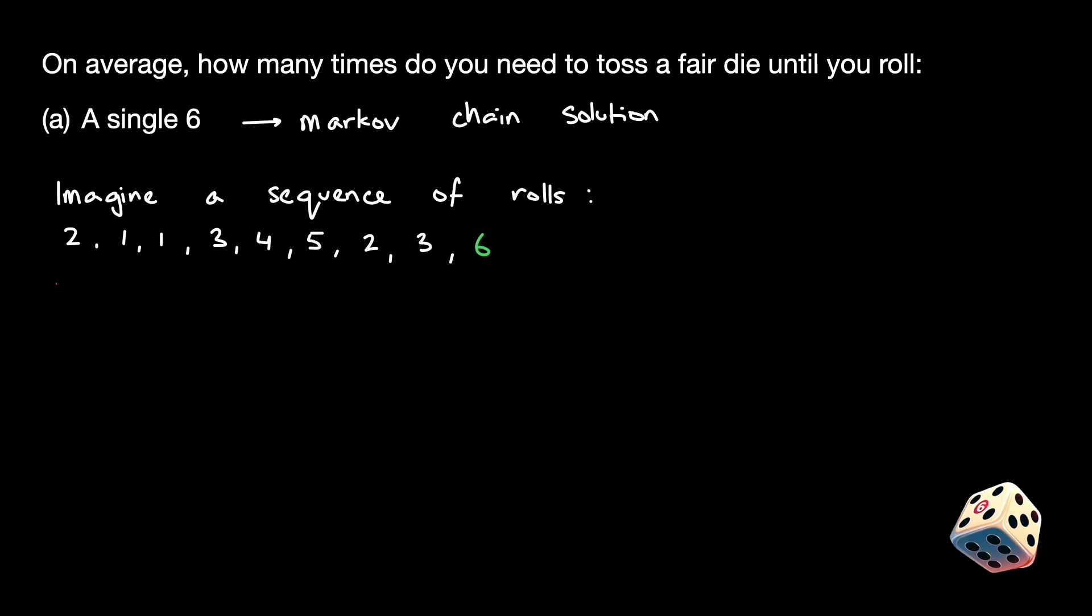Now, we can encode these as one of two states, NOT-6 and 6. Finally, to solve this as a Markov chain, we need to find the transition probabilities between these two states.